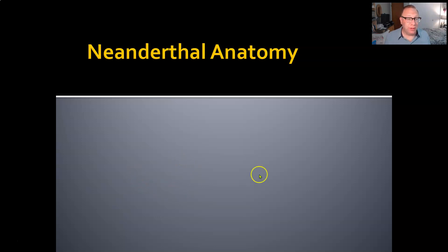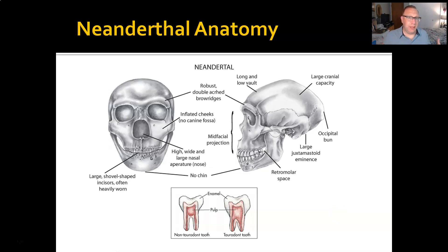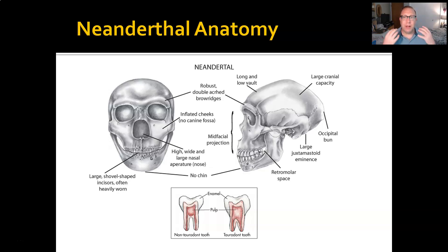Without further ado, let's get started. Many of the differences between anatomically modern humans and Neanderthals are in the skull—certainly the most noticeable ones at first glance. Neanderthals have a very robust double-arched brow ridge.